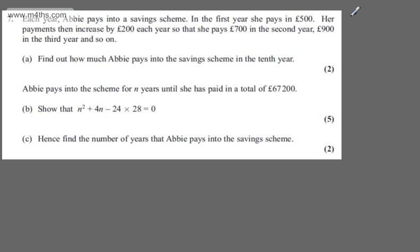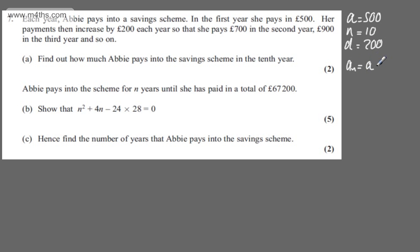This is an arithmetic sequence, so all I'm going to do is collect the information: A, N, and D. A is the first term, which is £500. N is the number of terms, which is 10. And D is the common difference, which is £200. Using A sub N equals A plus N minus 1 times D, we can simply sub in this information.